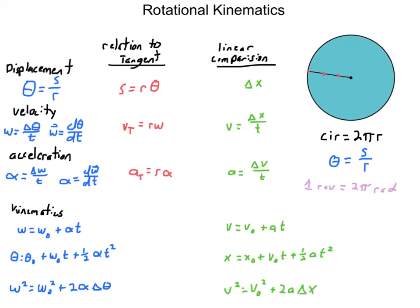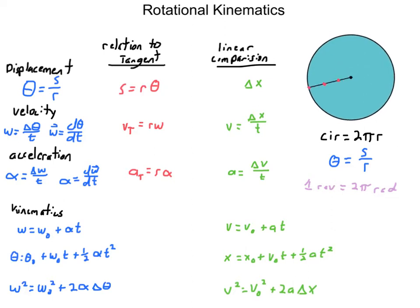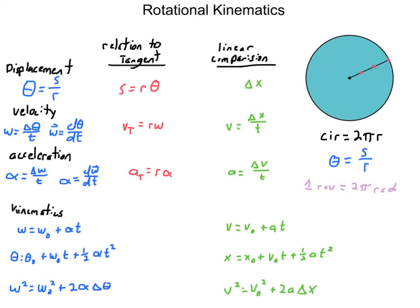We're going to jump into rotational kinematics and rotational motion - everything moving in a circle and spinning around. One big question is: why do we need this? Notice the circle with three dots along the radius. Each dot is moving at a different tangential velocity. The dot on the outside has to move much faster because it has a further displacement S to cover. So we need to relate all those points along the radius together, and we do that by dealing with angles.